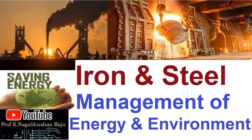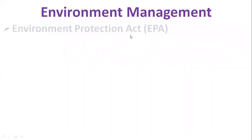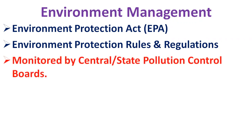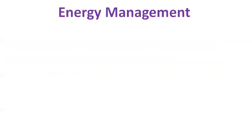Welcome back. Today we shall discuss the iron and steel industry — specifically the management aspects of energy and environment. Iron and steel industries in India are covered under the Environmental Protection Act (EPA) as well as environment protection rules and regulations enacted by the Ministry of Environment and Forest. Entrepreneurs are required to obtain statutory clearances from union or state governments under the EPA for setting up any new iron and steel plant or substantial expansion.